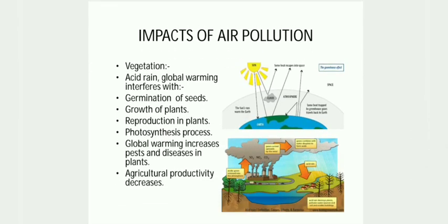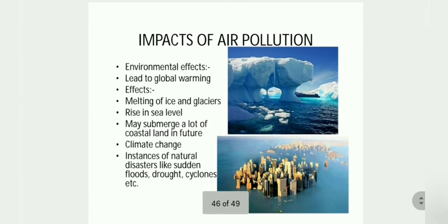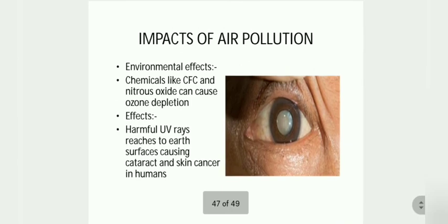Air pollution can also cause global warming and acid rain, which can decrease agricultural productivity. Global warming can cause melting of glaciers and ice, rise in sea level, etc. Air pollutants like CFCs and nitrous oxide are responsible for ozone depletion, due to which harmful UV rays enter the earth's surface and cause cataracts and skin cancers in humans.